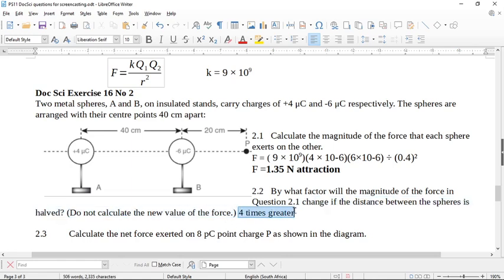Now for the more interesting part of this question. Calculate the net force exerted on the 8 picocoulomb charge P as shown in the diagram. So before we go any further, let's look what's going to happen to P. First of all, it's a picocoulomb charge. So picocoulombs are 10 to the negative 12. So it's a teeny tiny charge.